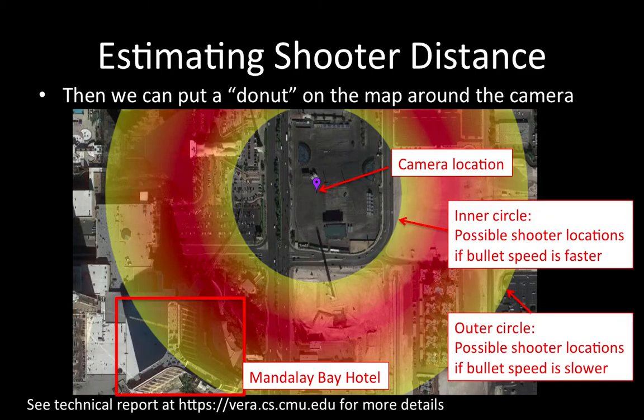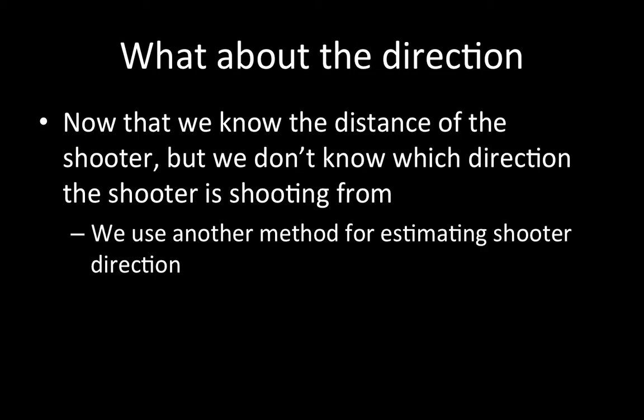Here you can see a donut shape estimation. Now that we know the distance of the shooter, but we don't know which direction the shooter is shooting from.